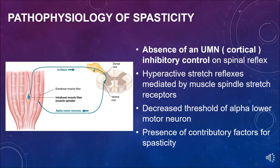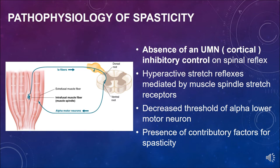The primary driver of spasticity pathophysiology is upper motor neuron injury, where cortical inhibitory control is lost. At the spinal stretch reflex level there is no cortical inhibitory control, so it happens in an erratic, exaggerated fashion. Additionally, there are spinal-level factors including reduced reciprocal inhibition and decreased presynaptic inhibition of 1A afferent terminals.